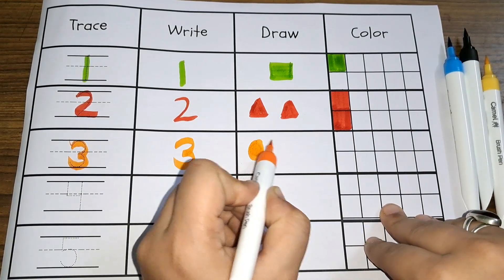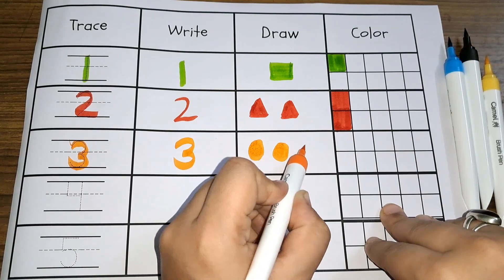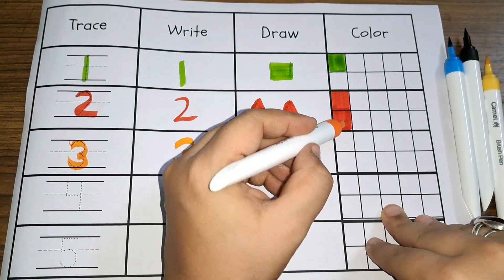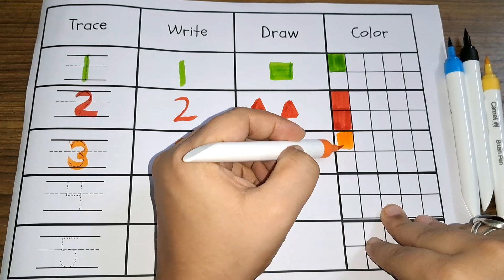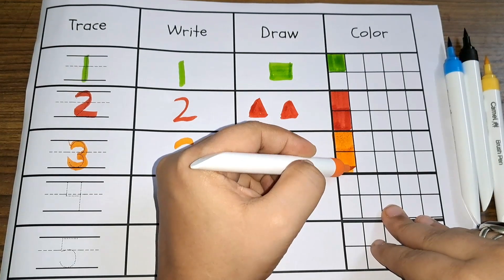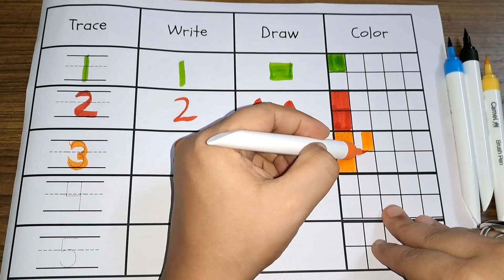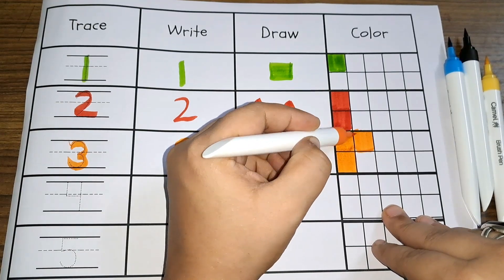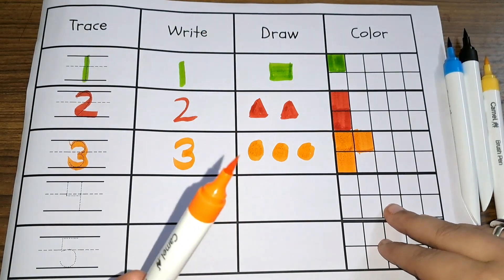3 circles: 1, 2, and 3. Let us color the squares now, 1, 2, and 3. 3 squares with orange color.